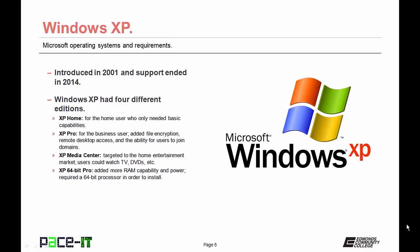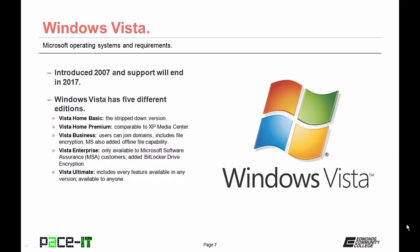Let's move on to Windows Vista. Vista was introduced in 2007 and support ends in 2017. It has five different editions. Vista Home Basic is the stripped-down version. Vista Home Premium maps to XP Media Center. Vista Business allows users to join domains, adds file encryption, and Microsoft added offline file capability. Vista Enterprise was only available to Microsoft Software Assurance customers and added BitLocker Drive encryption — whole drive encryption. Vista Ultimate includes every feature available in any edition.